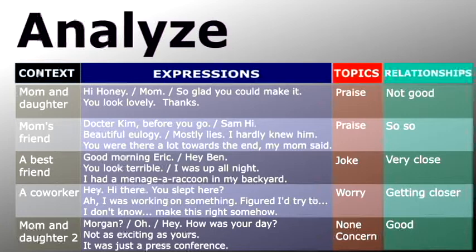Moving on. In the third scene, Ben, the smaller guy, said to the big guy 'you look terrible.' If they are not close friends, the big guy could think that's offensive. However, they're best friends. So their close relationship makes this expression acceptable and sound like a joke. So making a joke might be a good starter if you want to talk to your close friends.